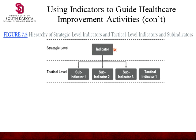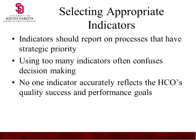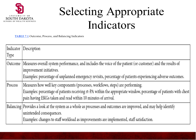Here's a hierarchy of strategic-level indicators and tactical-level indicators, including sub-indicators. The strategic level is the overall goal — getting patients out in an hour — and the tactical indicators represent the steps and people involved in achieving it. You have to select appropriate indicators. Indicators should report on processes that have strategic priority. Using too many indicators will often confuse the decision-making process.